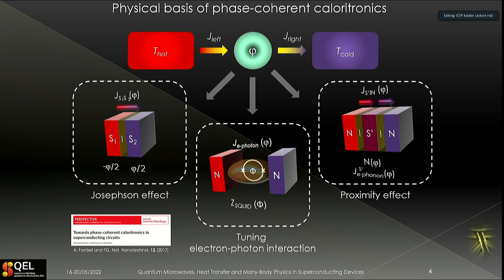The physical basis of phase-coherent caloritronics can be explained with the aid of a simple cartoon. Since we are dealing with solid-state systems, we are interested in quasiparticle electrons and phonons. Phase-coherent caloritronics deals with envisioning novel physical mechanisms able to control, via the mesoscopic quantum phase typical of superconducting circuits, the manipulation of heat current flowing from hot to cold electronic reservoirs. We have identified basically three relevant routes to manipulate heat in nanoscale systems.